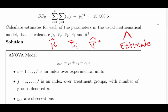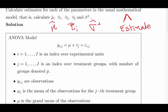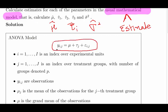The question doesn't explain what tau, sigma, and mu are, but it does refer to the usual mathematical model. This is the ANOVA model — the linear model of the observation. Each observation is decomposed as the overall mean, plus an effect for each of the three groups, plus a bit of random error. There are 30 observations, 10 in each of the three groups.